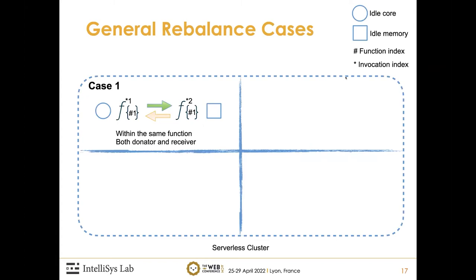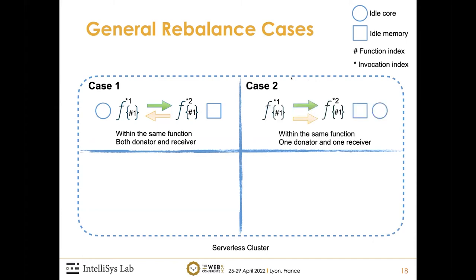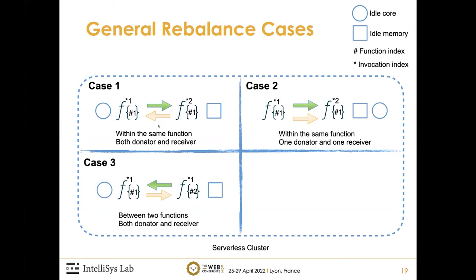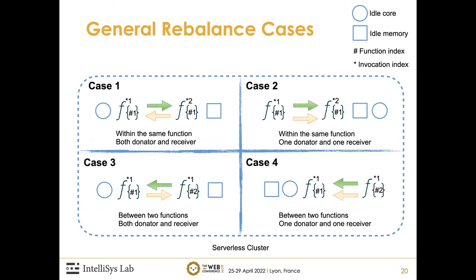It is complicated to operate harvesting and acceleration in a serverless cluster. There are four general resource rebalance cases. In case one, two invocations from the same function can both be donators and receivers — for example, function one donates its idle CPU core to invocation two, while invocation two donates its idle memory back to invocation one. Case two involves one pure donator and one pure receiver, both from the same function. Cases three and four involve invocations from different functions, which can be both donators and receivers, or pure donator and pure receiver.